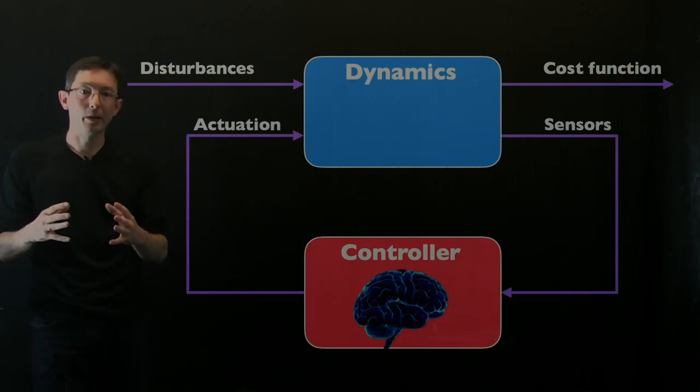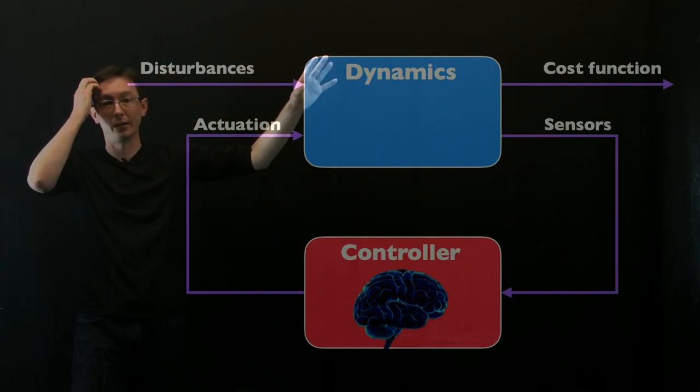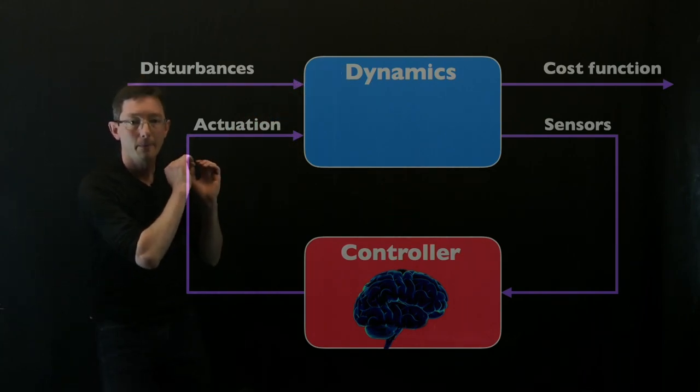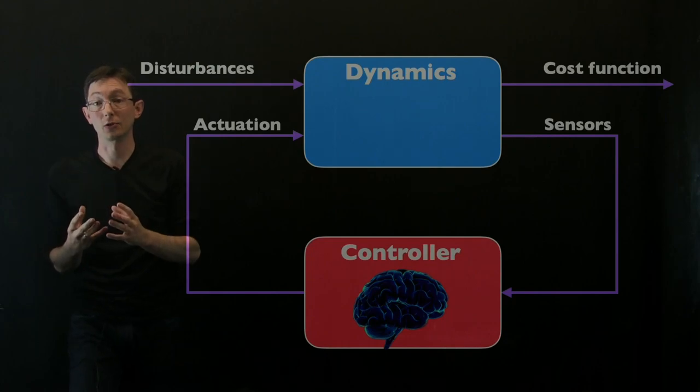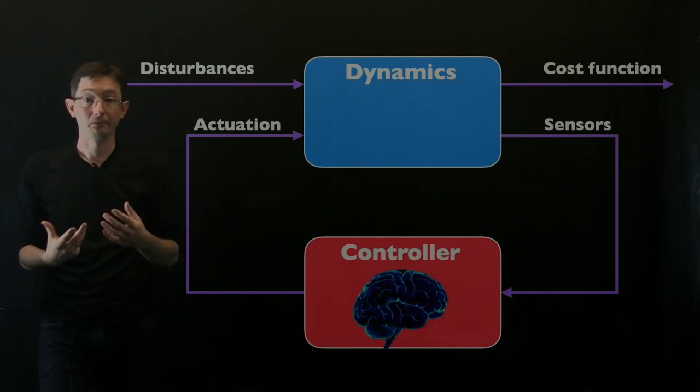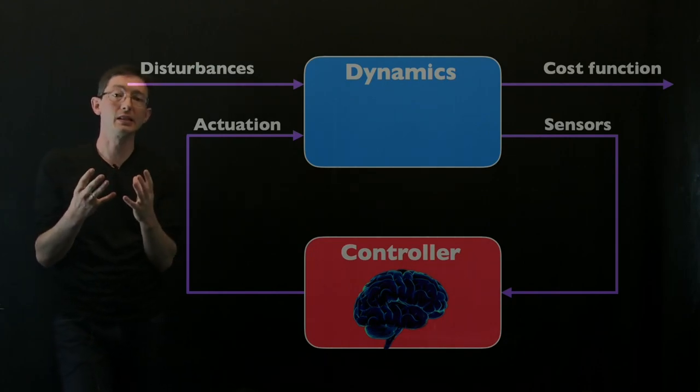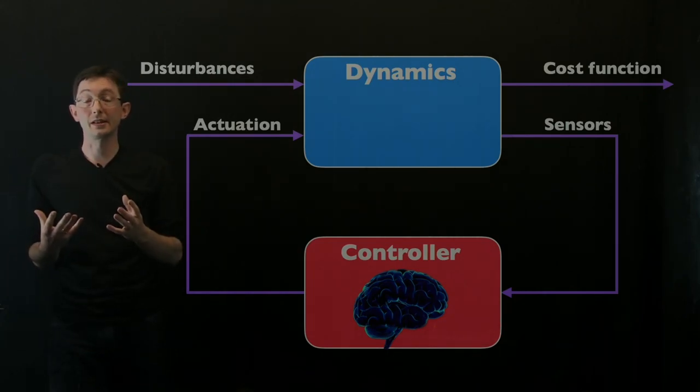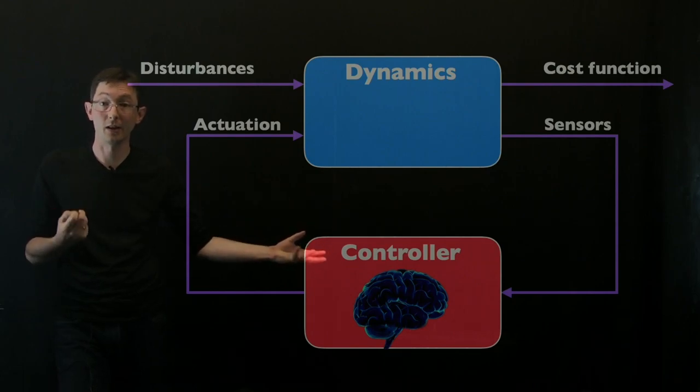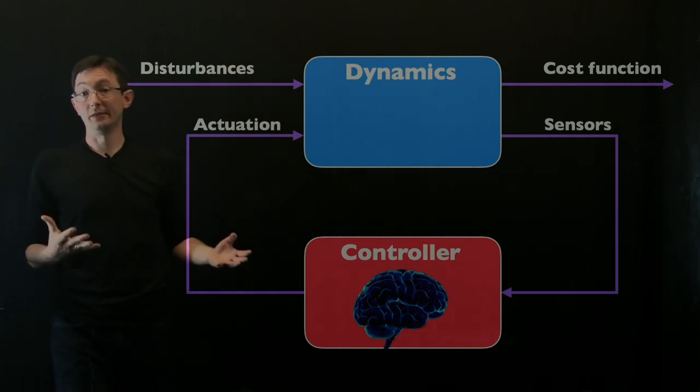So instead of putting all of that energy into the dynamics modeling, maybe we should be spending more effort directly trying to design effective control laws using data. And so this is largely inspired by the fact that in modern systems of interest it might actually be possible to try lots of control laws to gather lots of data.